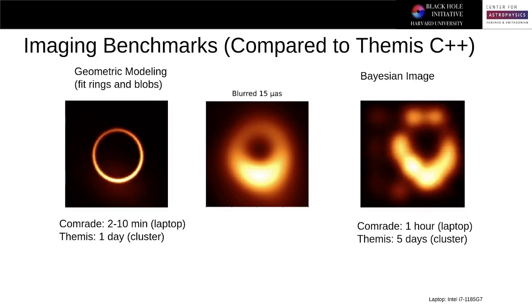Moving on to actual imaging benchmarks, we found that Comrade is faster than Themis in all cases, namely for geometric modeling. While Comrade takes about two to ten minutes on a laptop, Themis takes about a day on a cluster. Moving to more complicated models like Bayesian imaging, where we assume very little about the image structure, we find that Comrade takes about an hour on a laptop to find a posterior, while Themis takes up to five days on a cluster.